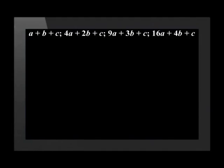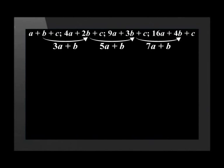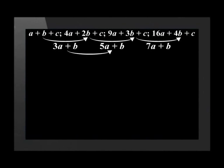Now that we've found the algebraic representation of each term, let's arrange them as we would a normal number pattern and work out the first difference between these first four terms. Term 2 minus term 1 gives us 3A plus B. Term 3 minus term 2 gives us 5A plus B. Term 4 minus term 3 is 7A plus B. Now let's work out the second difference: 5A plus B minus 3A plus B equals 2A, and 7A plus B minus 5A plus B is equal to 2A. As expected, since we are working with a quadratic sequence, the second difference is constant.